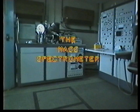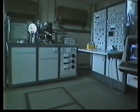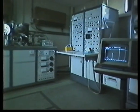A mass spectrometer is able to analyze substances into their component parts. Here on the left is a mass spectrometer with all the associated equipment used to analyze the output here on the right.